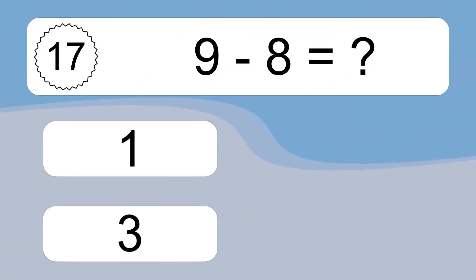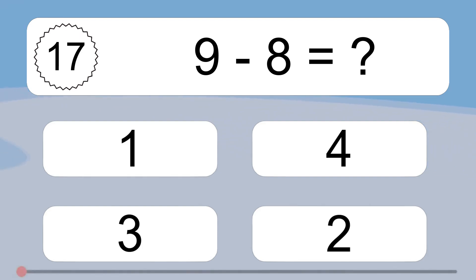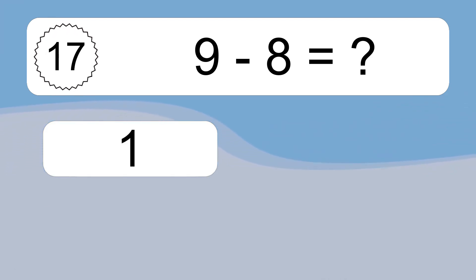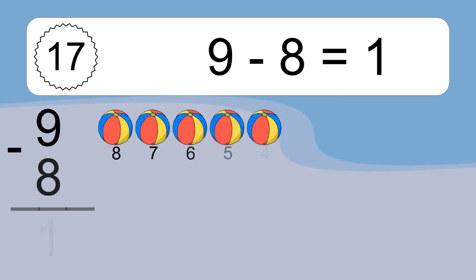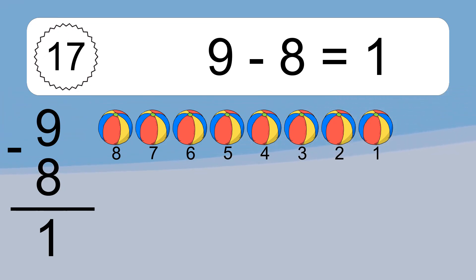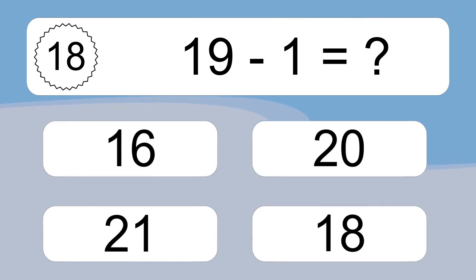9 minus 8 equals what? 9 minus 8 equals 1. Let's count it: 8, 7, 6, 5, 4, 3, 2, 1.